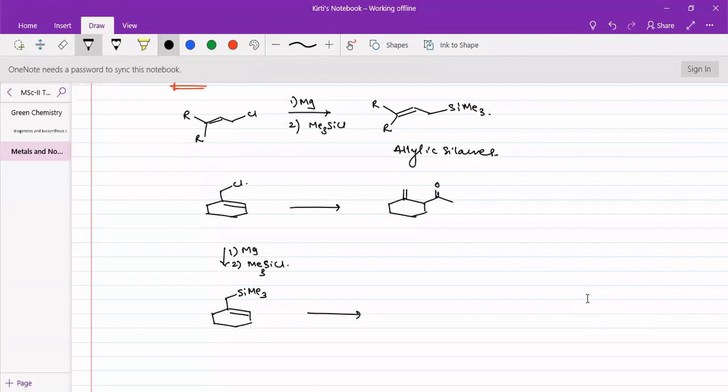Then we want to introduce this acetyl chloride, so for that what we will do is we will have acetyl chloride in presence of AlCl3, we will add.